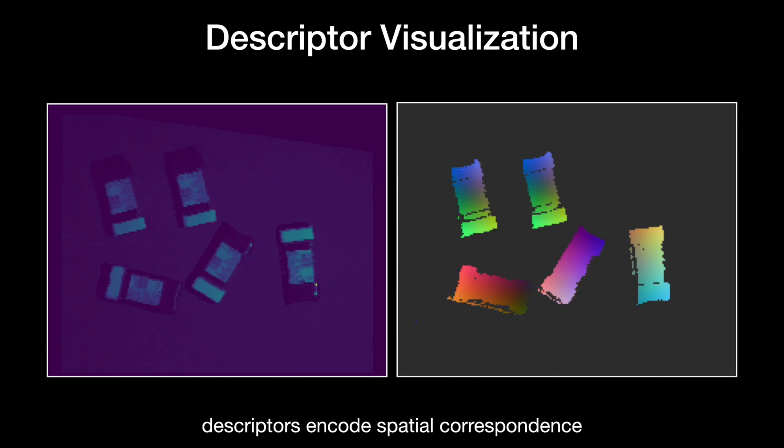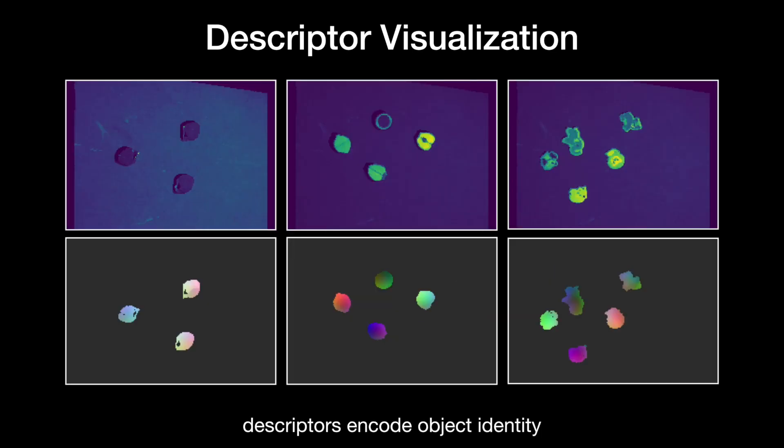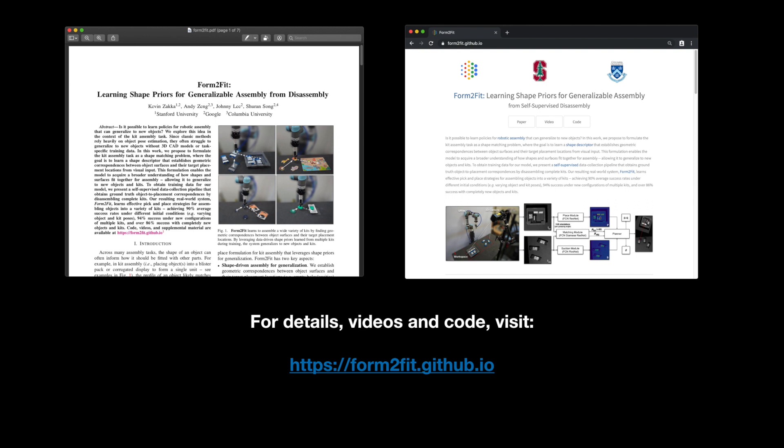And finally, that they have learned to encode object identity with different zoo animals and fruits exhibiting different colors. For more details, please check out our technical report at the following URL. Thank you for watching.